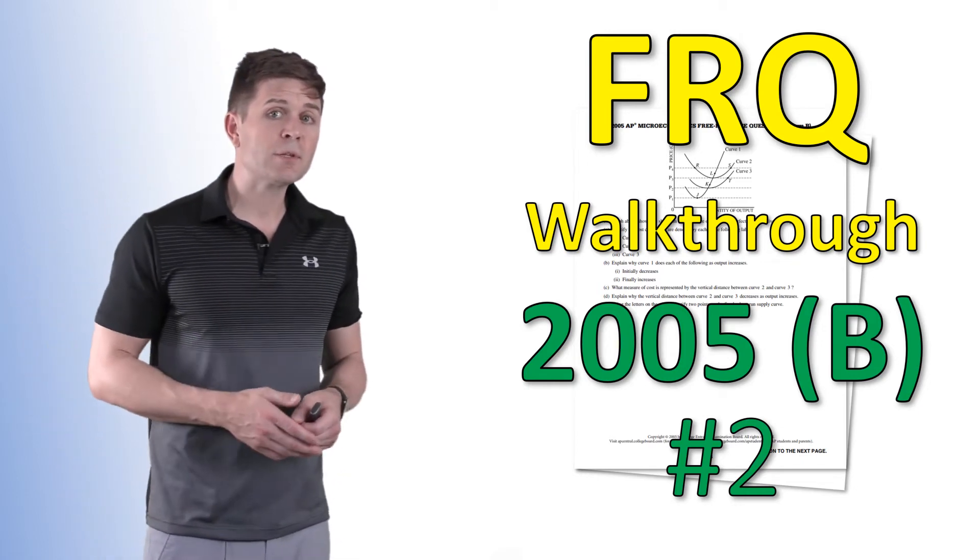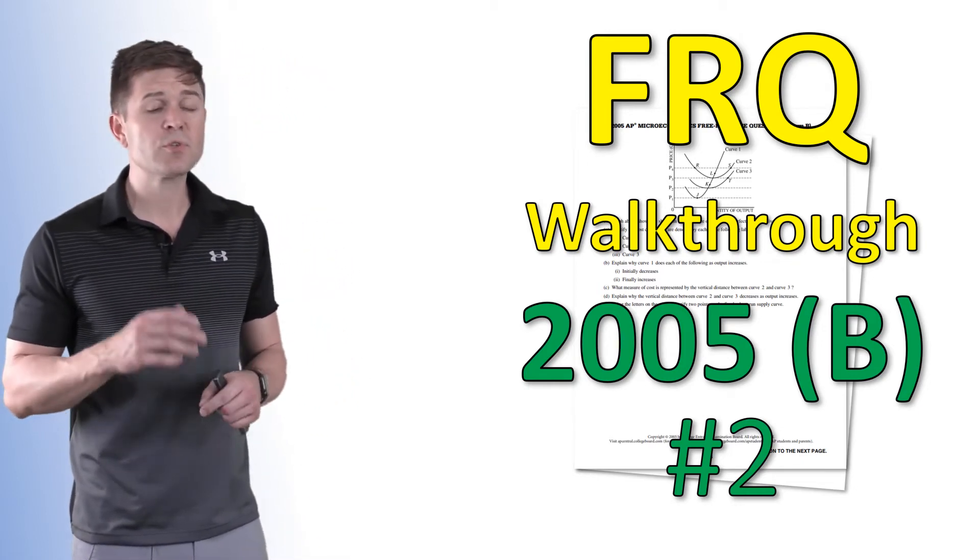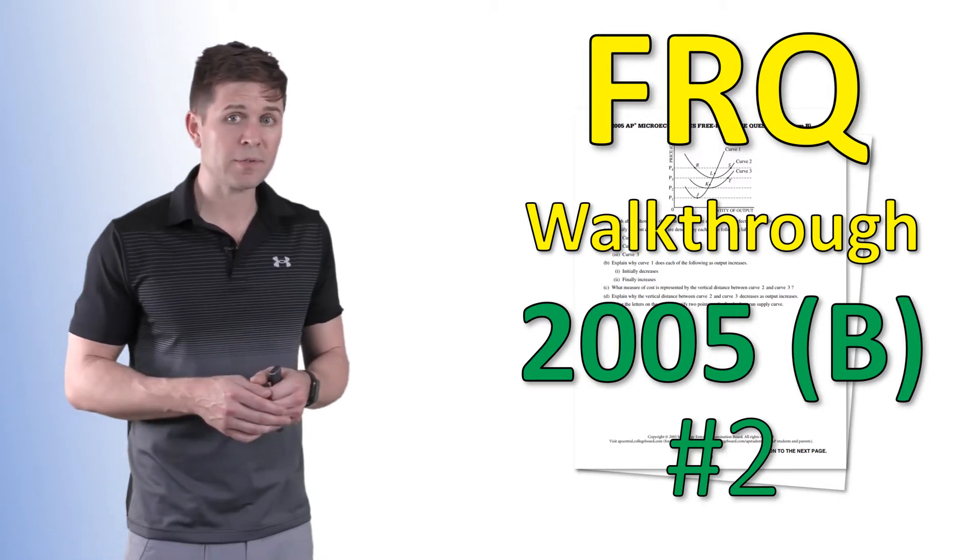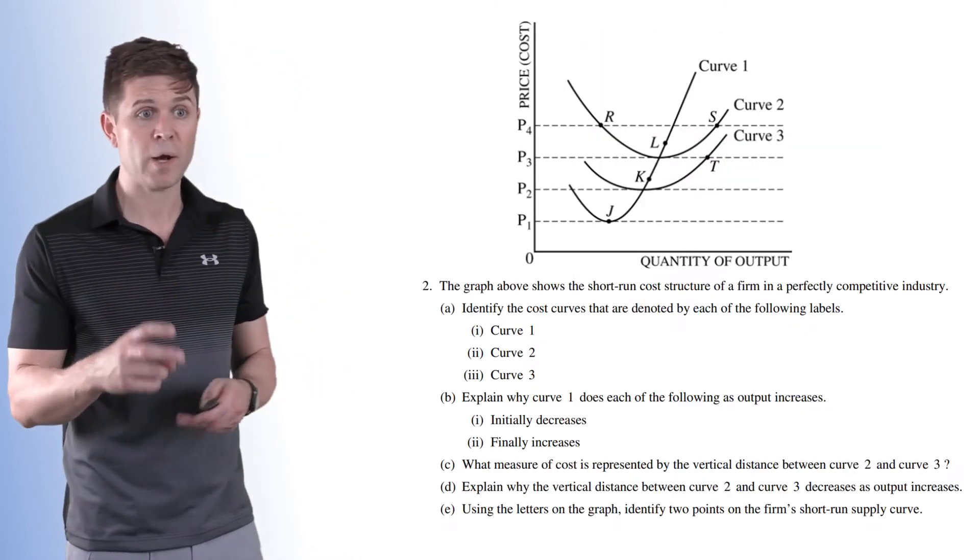Hey guys, welcome back to Egun Class. Today we're going to be looking at an FRQ question from the 2005 AP Micro Exam. This is the B version of the test and the number two question.